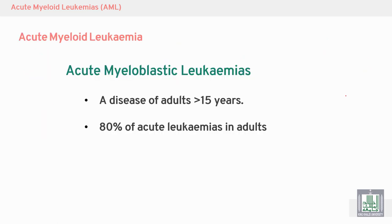Acute myeloid leukemia is a disease characterized by being more common in adults — more than 15 years of age. 80% of acute leukemia in adults is AML.